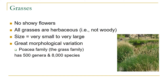All grasses are herbaceous — they're not woody and they die back to the ground every year. Some exceptions exist, like bamboo, which is actually a grass and can be quite strong. They vary in size from tiny plants like six weeks fescue — just two or three inches tall — to bamboo. The family all grasses belong to is the Poaceae family, with over 500 genera and 8,000 species, including important plants for humans such as wheat, rye, corn, and barley.